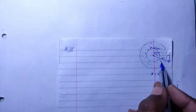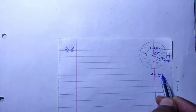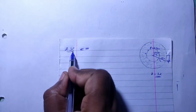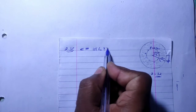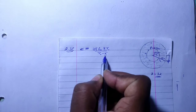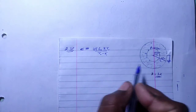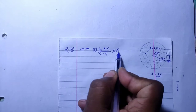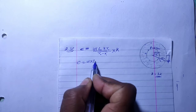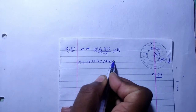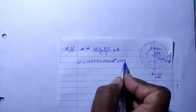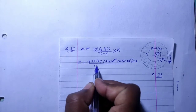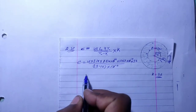Now to find the capacitance. The formula for capacitance with dielectric constant is 4πε₀ × K × r1 × r2 / (r2 − r1), where r1 = 12 cm and r2 = 13 cm, and K = 32. So capacitance equals 4 × 3.14 × 8.854 × 10⁻¹² × 32 × (12 × 13 × 10⁻⁴) divided by (13 − 12) × 10⁻².